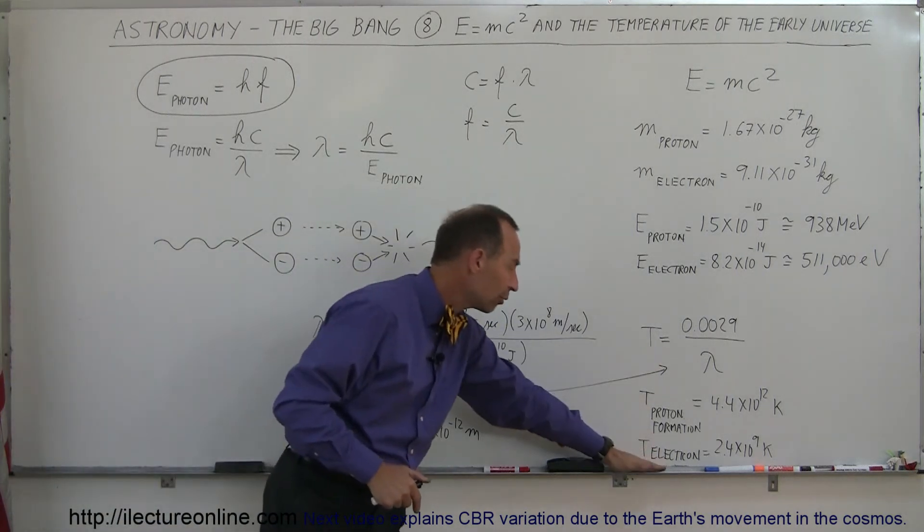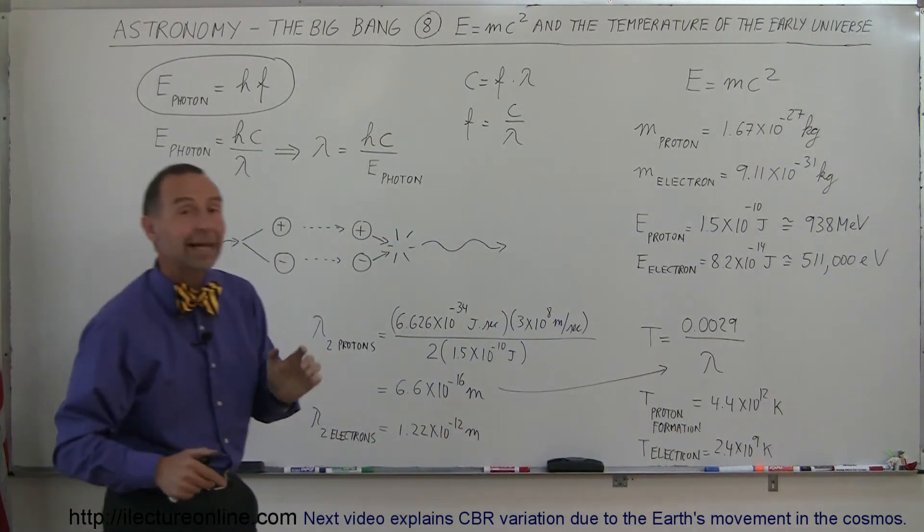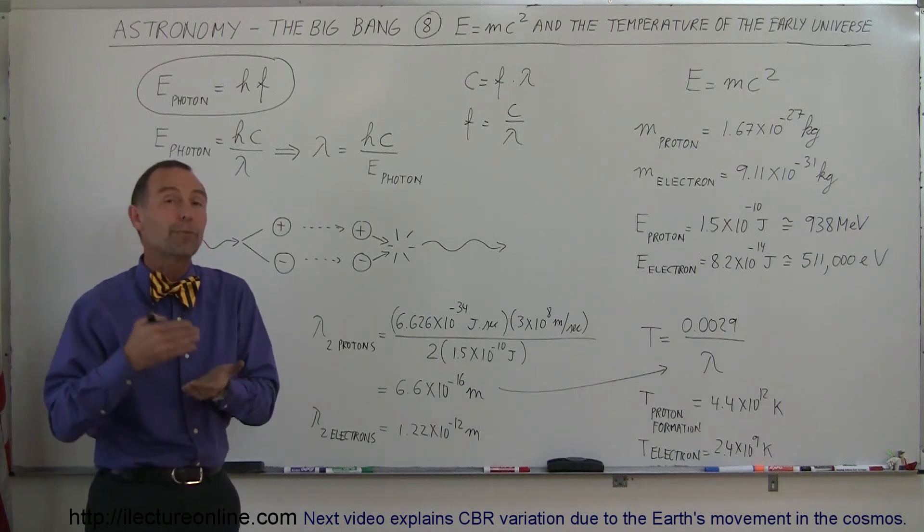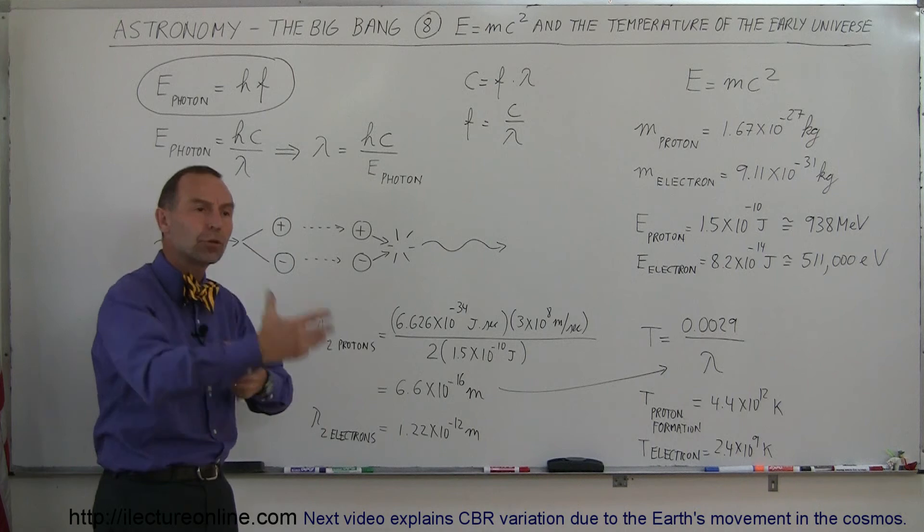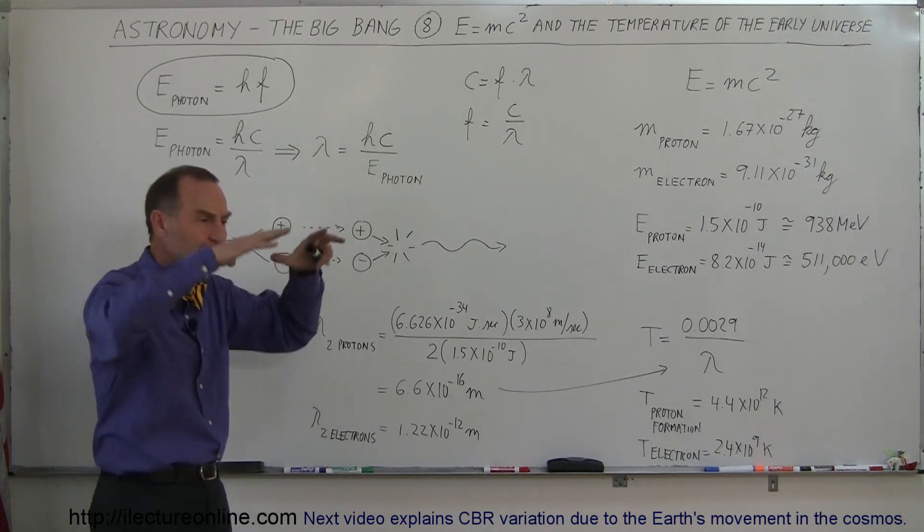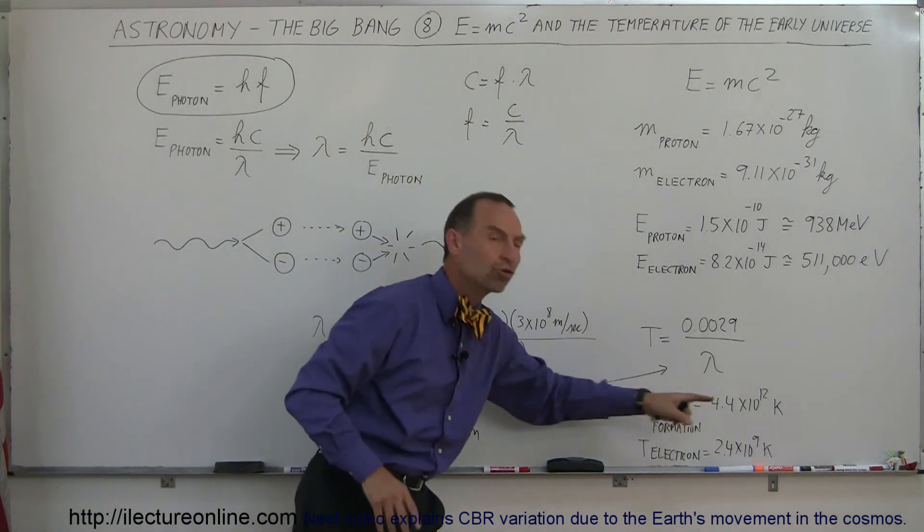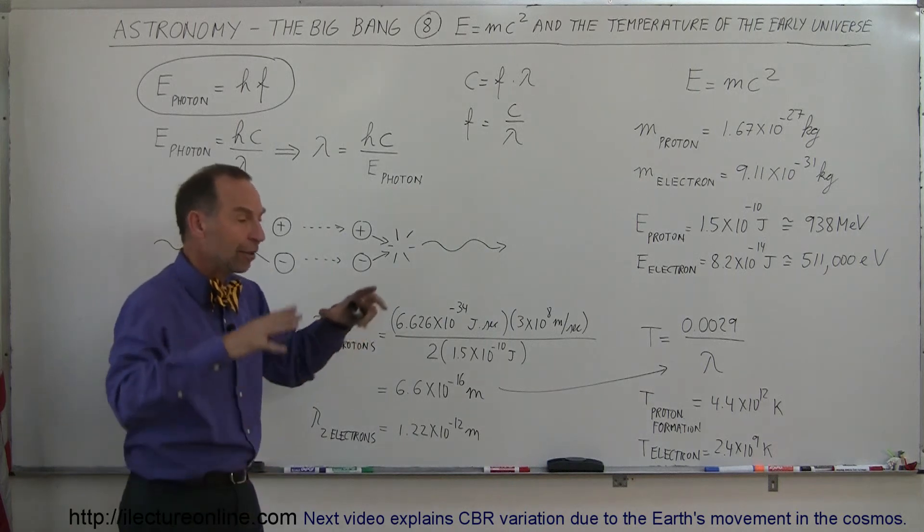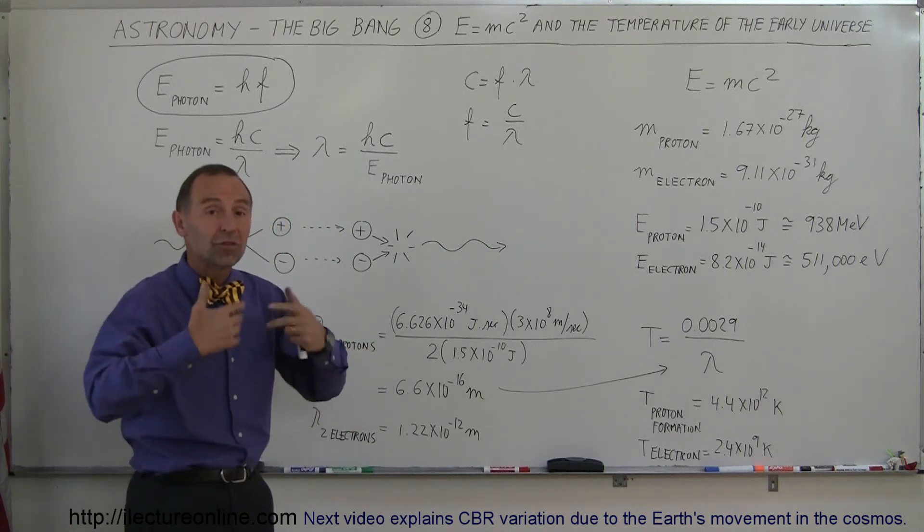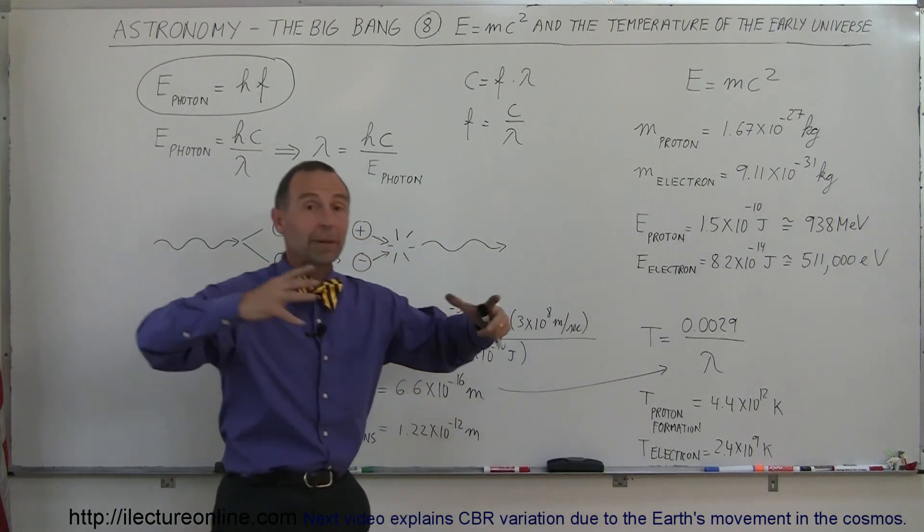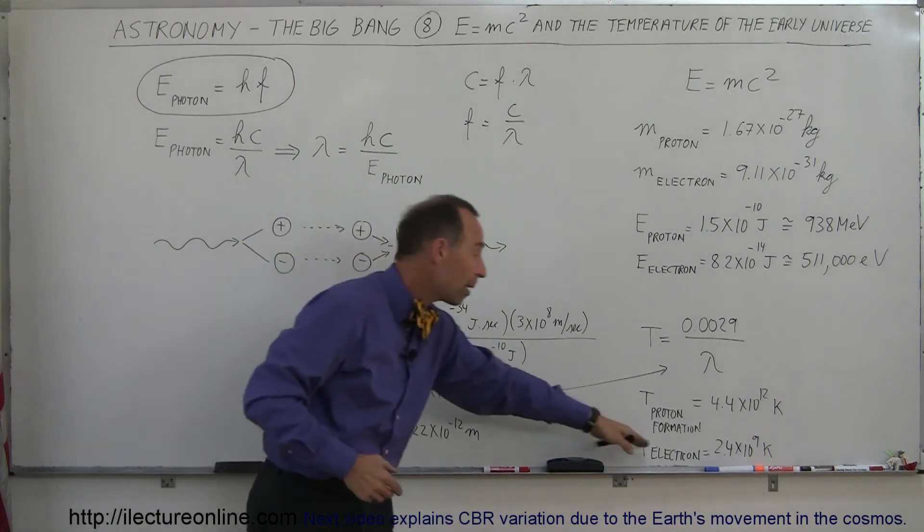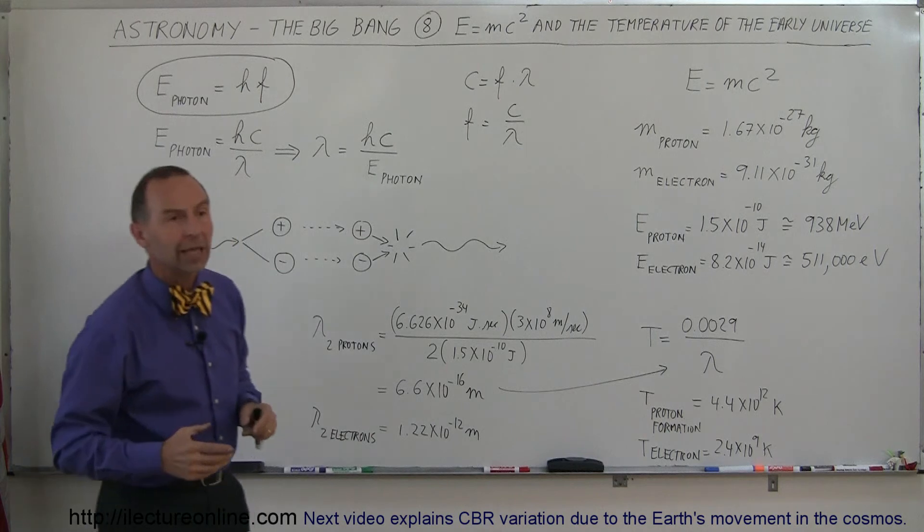That equates, using Wien's Law, to a temperature of 2.4 times 10 to 9 Kelvin, which means 2.4 billion Kelvin. So the universe was ferociously making protons and anti-protons until the temperature dropped below 4.4 trillion degrees Kelvin. As the universe continued to cool down, it would still be able to make electrons until the temperature of the universe, as it expanded and the wavelength got longer, dropped below 2.4 billion Kelvin.